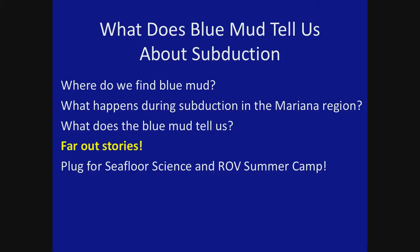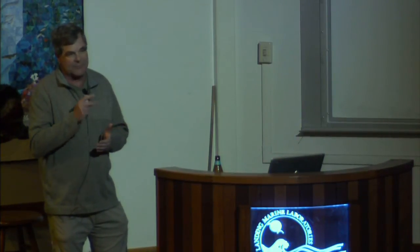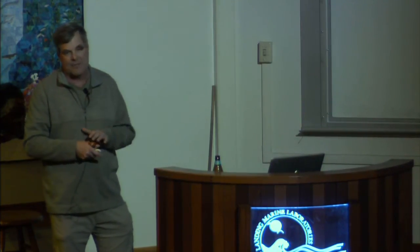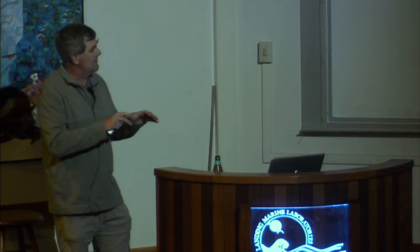So: we find blue mud only in the Mariana forearc, the one place where subduction is occurring with a cracked forearc where faults go all the way to the subduction channel. By looking at the pore waters and their asymptotic concentrations, we know the composition of the fluid coming up, and from that we can deduce what reactions are taking place at depth, what the temperature is, and how the plate interaction progresses as a function of depth.